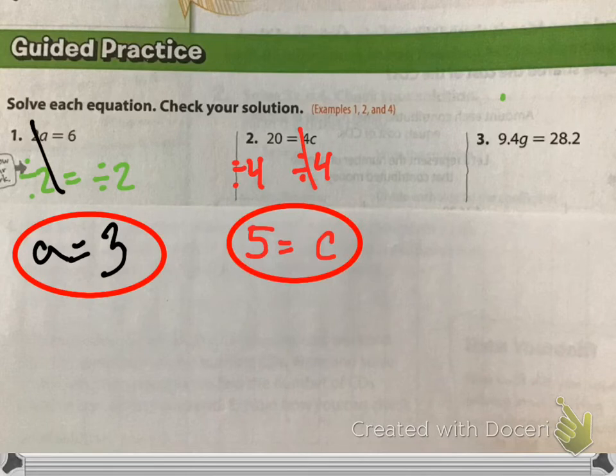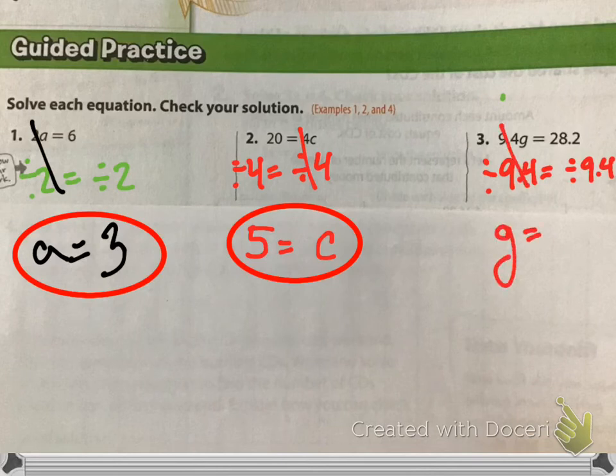So, 4 divided by 4 goes away. I'm left with C. 20 divided by 4 equals 5. I get 5 equals C. Last one. What am I going to be doing here, Matthew? What would we be doing here, Romario? What do we do, Lucy? We divide by 9.4 because that's the number that's on the same side as our variable. That goes away and we're left with G equals. Then we have 28.2 divided by 9.4, which is 3. Excellent.